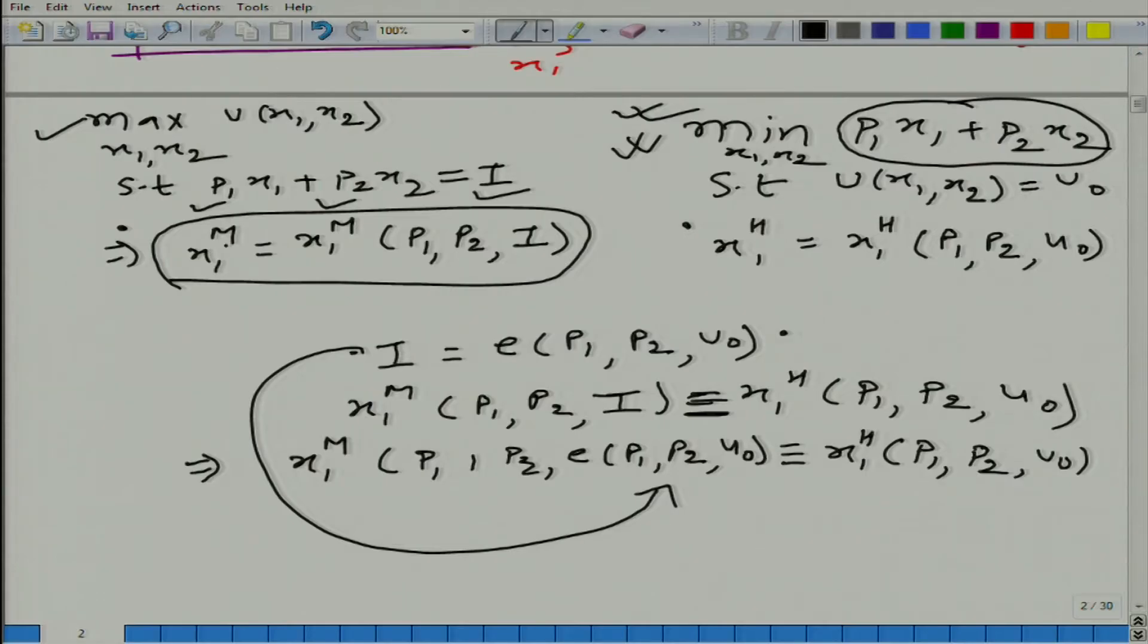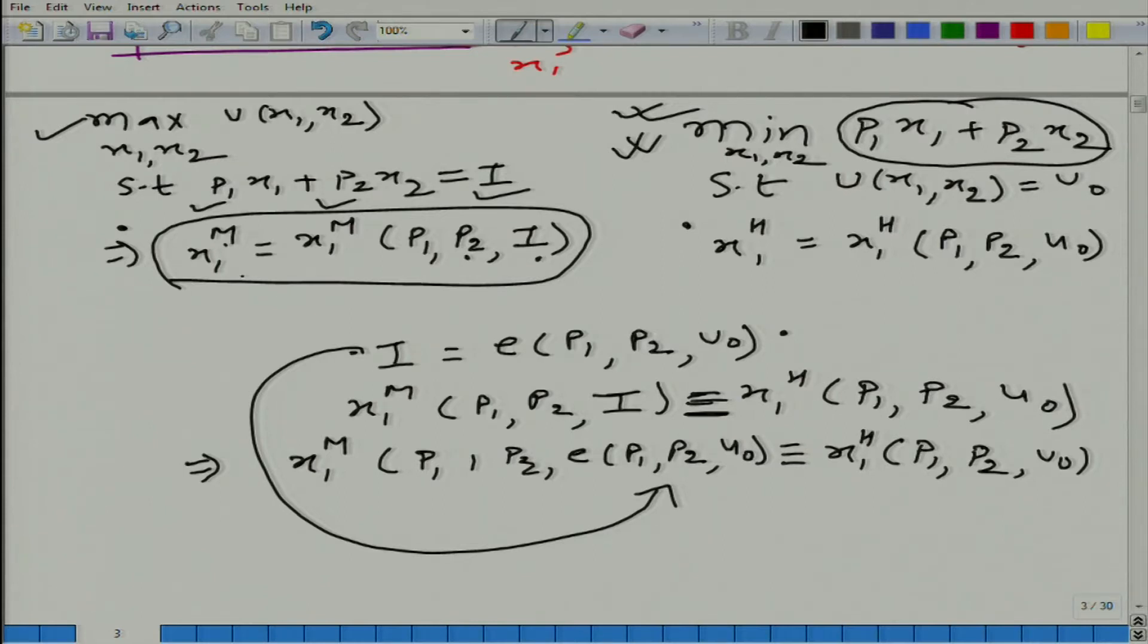So, what we are saying is this M represents - x1 is nothing but Marshallian demand. What is the demand function? The quantity demanded as a function of price. So, if we keep here p2 fixed and I fixed, what do I get? The demand function. So, this equation is called Marshallian demand function.